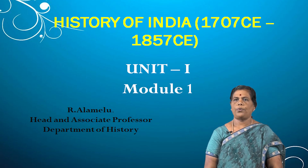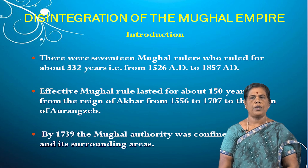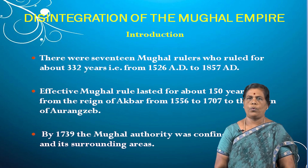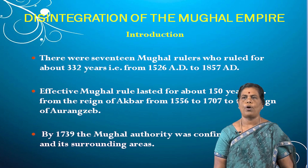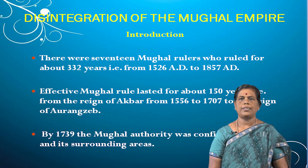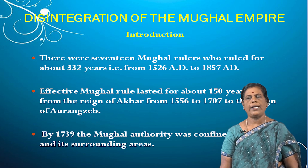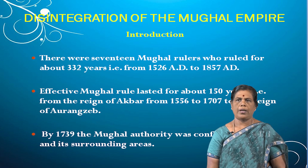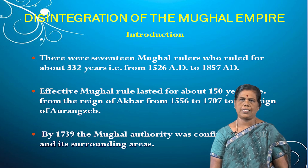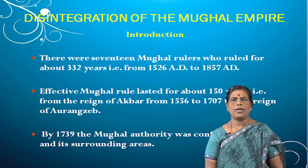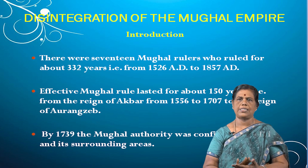Good morning girls. Today we are going to see about disintegration of the Mughal Empire. Introduction: there were 17 Mughal rulers who ruled for about 332 years, that is from 1526 AD to 1857 AD. The establishment of Mughal Empire was in 1526, and from this year onwards the Mughal rulers ruled up to the year 1857.